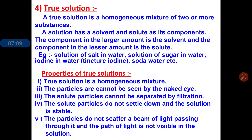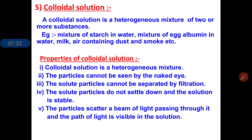If we try to pass a beam of light through a true solution, the beam of light is not scattered. The beam of light does not scatter through a true solution. The next type of solution is a colloidal solution.